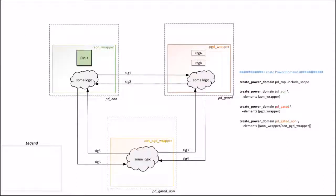The font size is very small but I wanted to capture everything in one slide. You can check my blog for the complete diagram. Now let us create the power domains. The create_power_domain is a very simple UPF command where we need to mention a user-defined domain name and the elements of the domain. However, while defining the top power domain we don't use the element flag; instead we use include_scope. We have created one top power domain and three other power domains named pdaon, pdgatedaon, and pdgated, with their corresponding logical hierarchy specified in the elements.